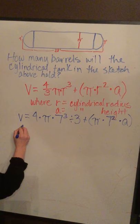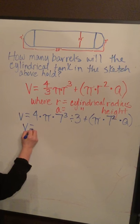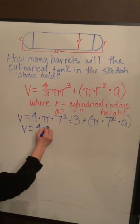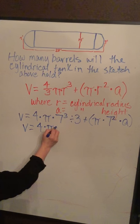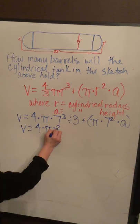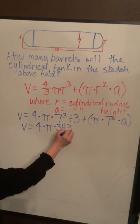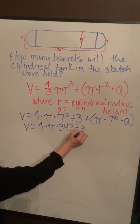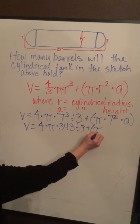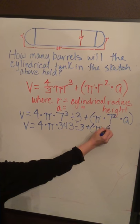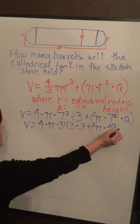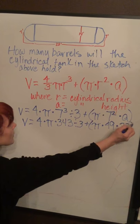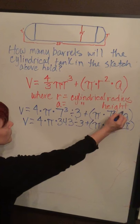So then we have v equals 4 times pi times 343 which is 7 cubed divided by 3 plus pi times 49 times your cylindrical height which is 28. I should have put that here as well, 28.